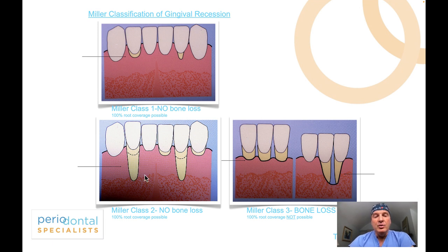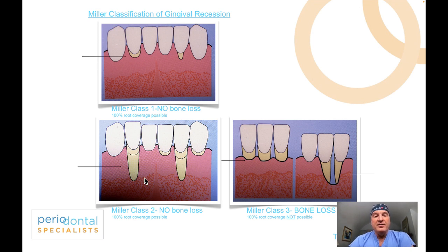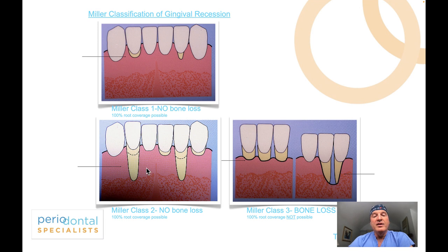When it comes to Miller Class 2, we have more involved recession — deeper into the keratinized attachment, or down past the mucogingival junction. Can we still achieve 100% root coverage? Yes, we can, as long as there is no bone loss. Radiographically, if you look at the crest and there is no bone loss, you could have significant recession and yet end up with 100% root coverage, all the way up to the CEJ — same as in Class 1.